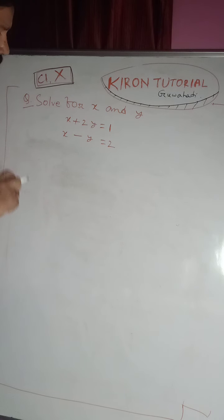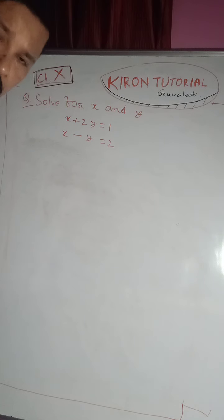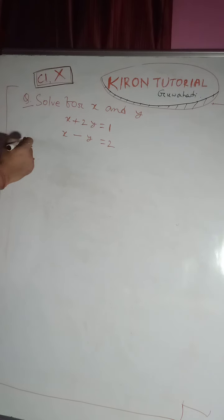The pair of linear equations in two variables. There are 3 methods to find the values of x and y: substitution, elimination, and cross multiplication. First, the substitution method.